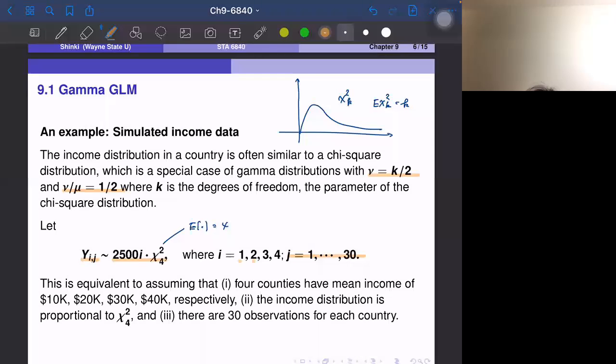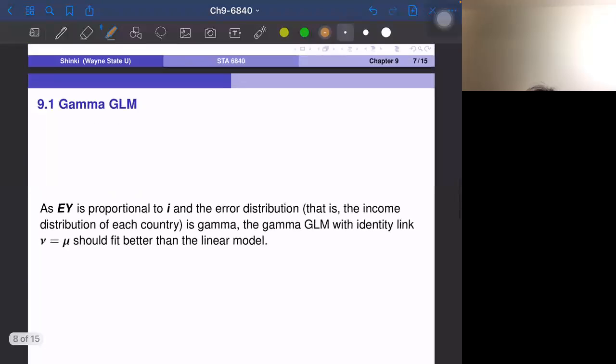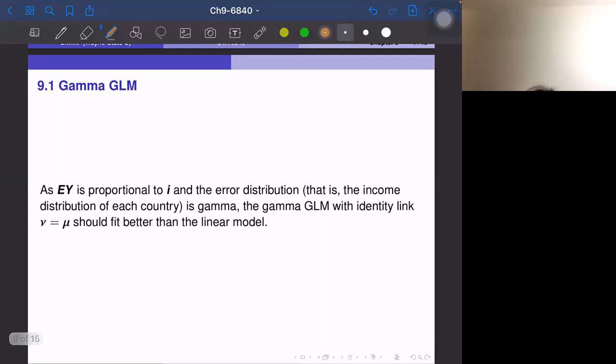And we generate 30 data points for each country. So we have four countries, one, two, three, four. And then we have 30 observations each. So that is the data we generated. Then the expectation of Y is proportional to i. So we just defined the expectation of Y is equal to 10,000 for i equals one, 20,000 for i equals two and 30,000 for i equals three and so on. So actually EY is proportional. So EY is 10,000 times i. So this relationship between Y and i is linear.